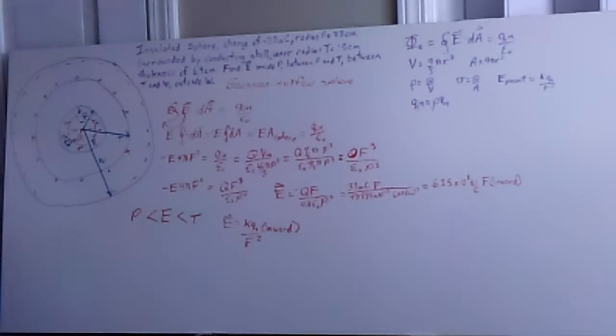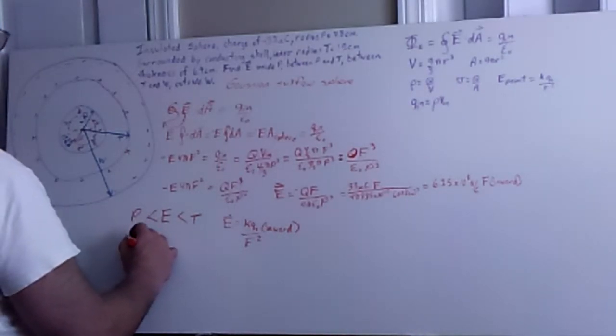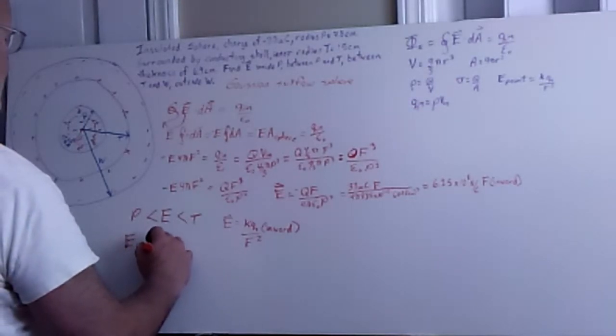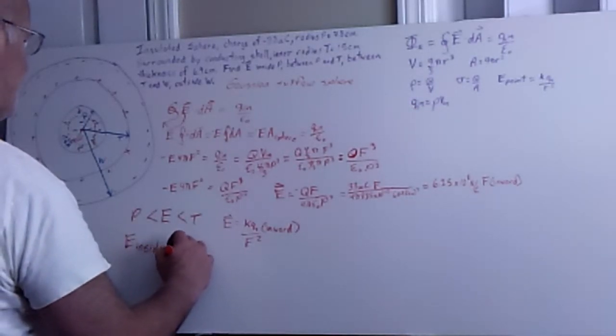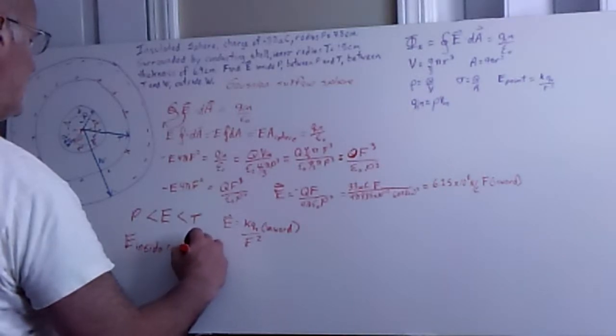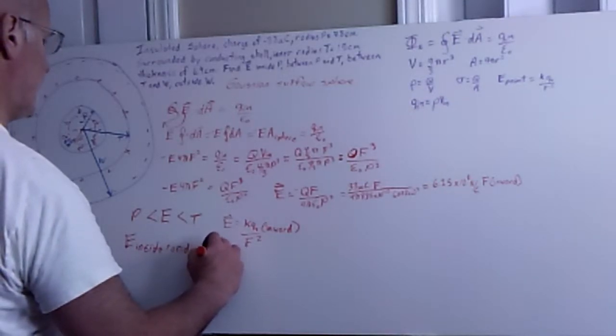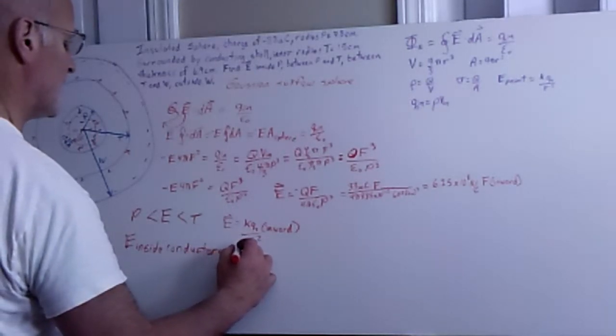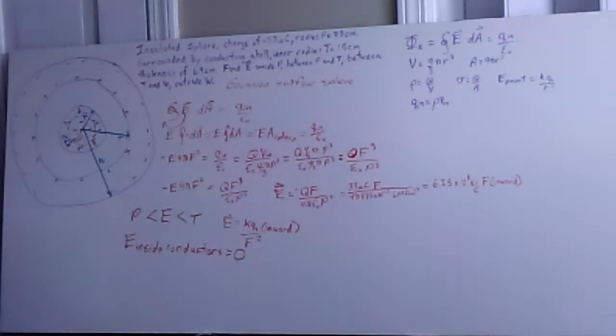So that's another golden rule to keep in mind saying that E inside conductors is always, always zero for electrostatic problems that we're concentrating on here. So that ends up being a pretty easy question to answer.